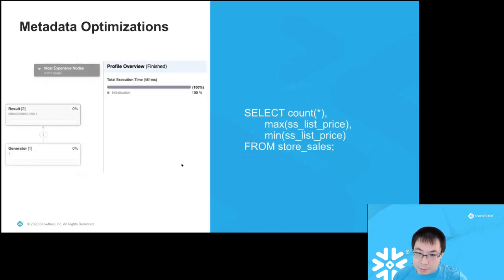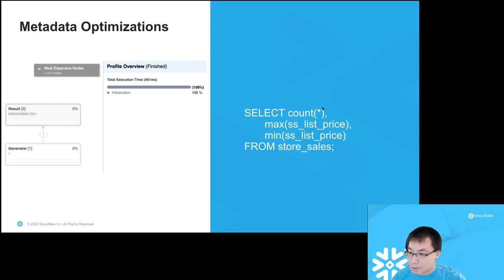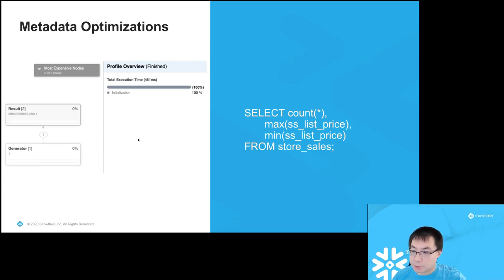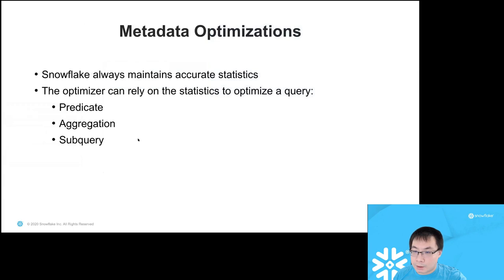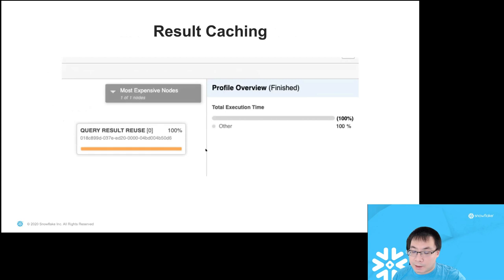For metadata optimizations: our optimizer stats are exact, so we can use them to directly return results for certain queries. A simple query with aggregations like count, min, max can be directly evaluated using the metadata — the query plan is simply a row generator with a result return, no actual table scan needed. Snowflake always maintains accurate stats. We can also rely on stats to optimize various facets of the query: predicates, aggregations, and subqueries. For result caching, the query plan will just look like a query result reuse operator that returns the result directly.